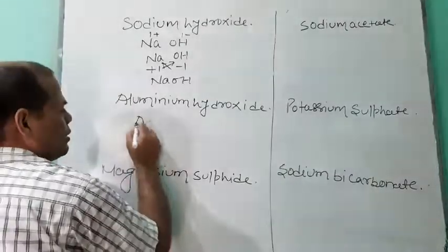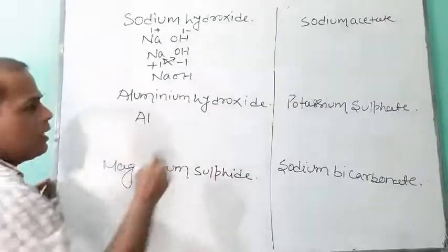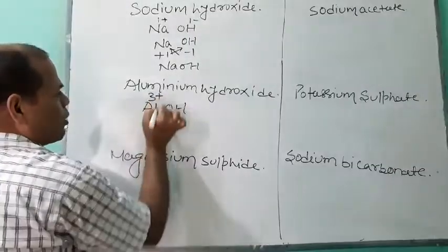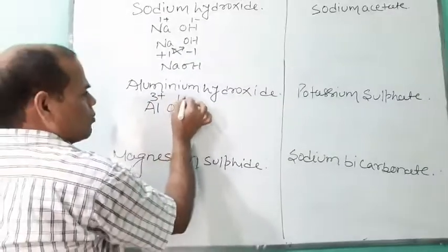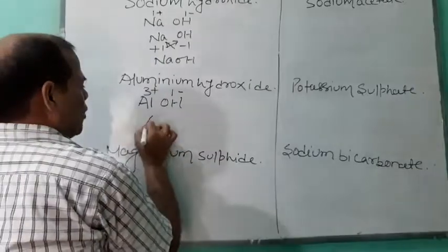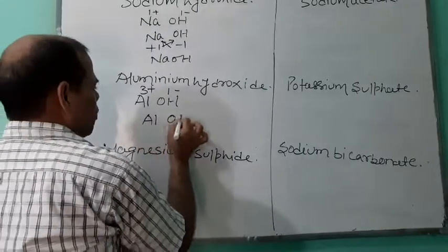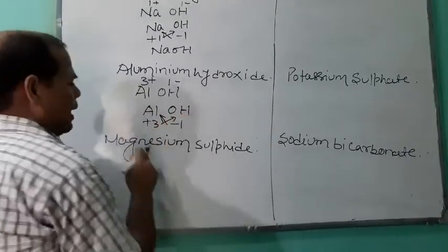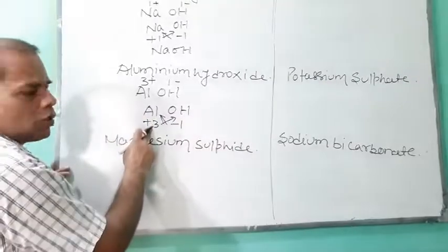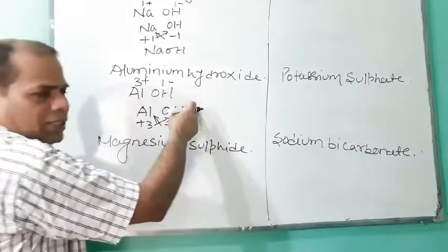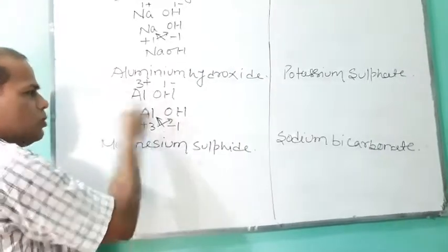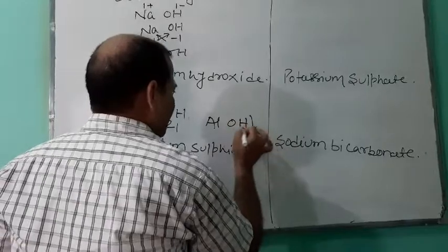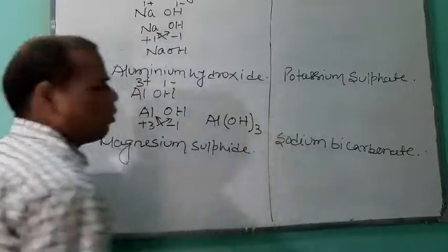Aluminium hydroxide. Symbol of aluminium is Al; hydroxide is OH. Aluminium has three units of positive charge; hydroxide has one unit of negative charge. Write Al, OH, plus three, minus one, and cross each other. Three goes towards OH, and one goes towards Al. So the formula of aluminium hydroxide is Al(OH)3.